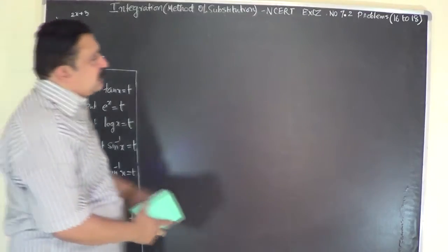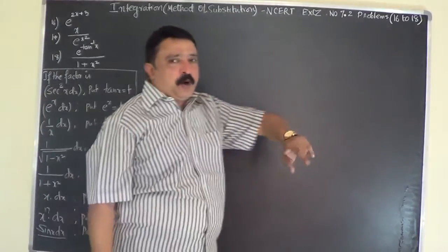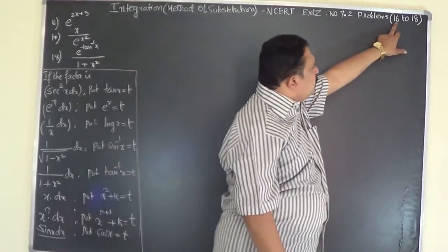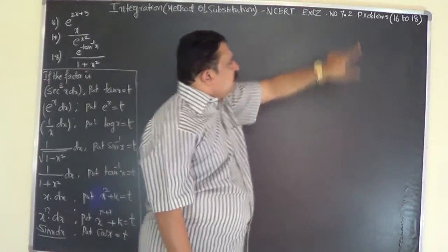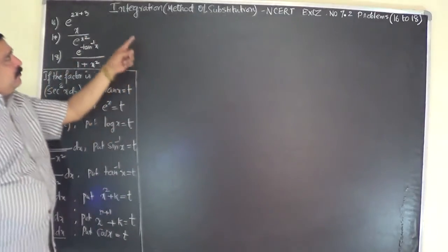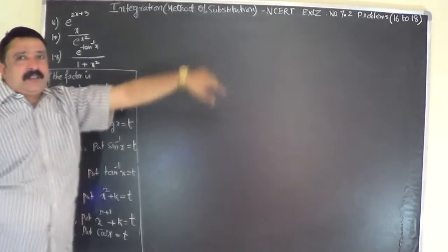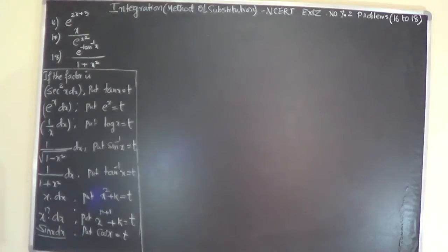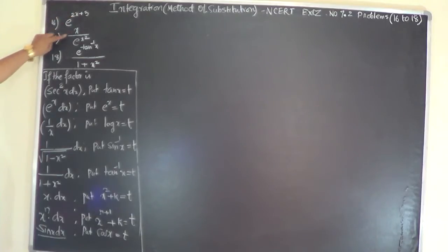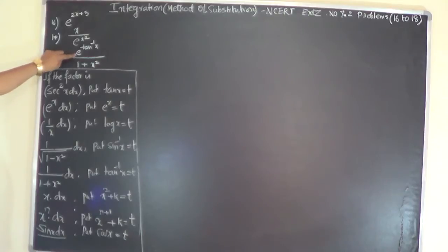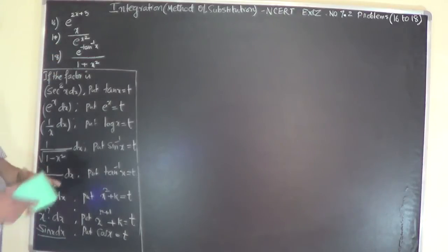Now we will take up the next three set of problems, that is problem number 16 to 18 of exercise number 7.2 of the NCERT book on integration by method of substitution. Problem number 16: integrate e to the power of 2x plus 3. Problem 17: integrate x over e to the power of x squared. Problem 18: integrate e to the power of tan inverse x by 1 plus x squared.